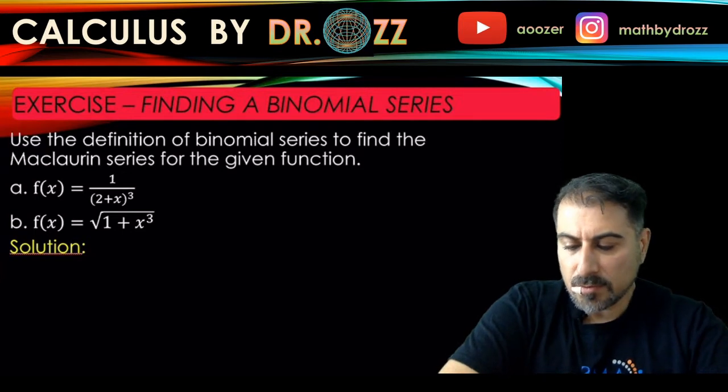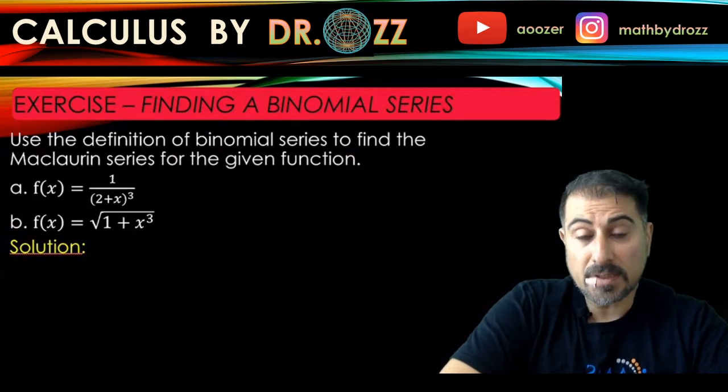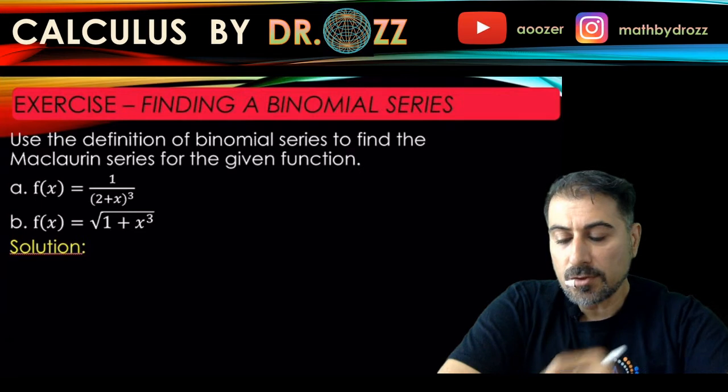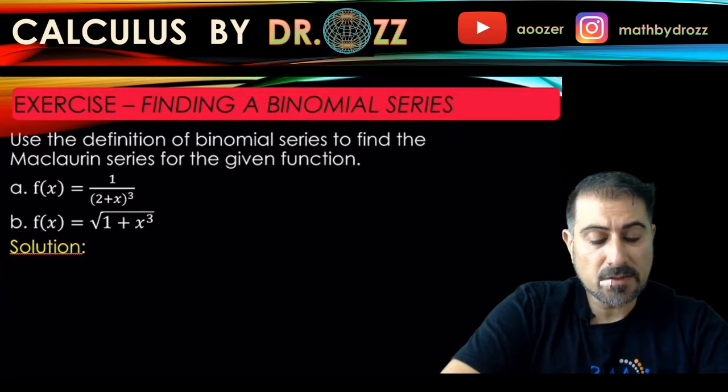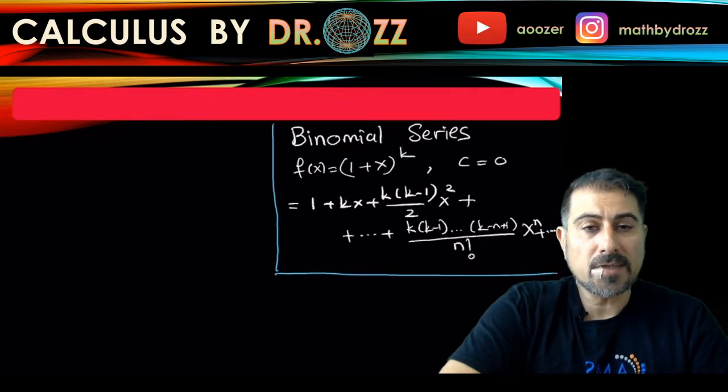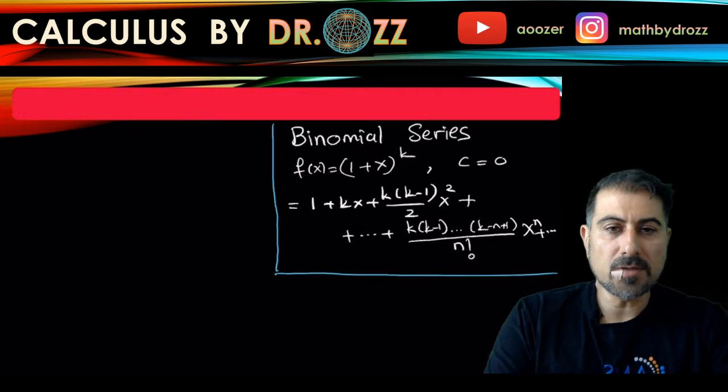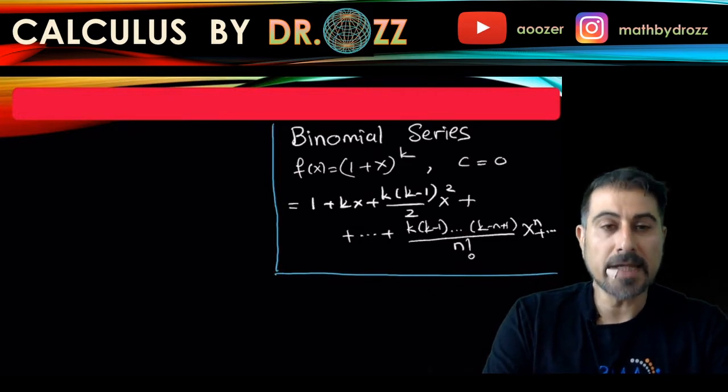I'm going to start with part a, with the fraction 1 over (2 + x) cubed, and I want to remind you what a binomial series is. If you have a series of the form (1 + x) to the power of k and if you want to write down a Taylor expansion at c equals 0, this is exactly the series you get at the end.